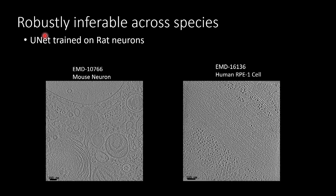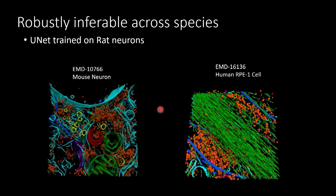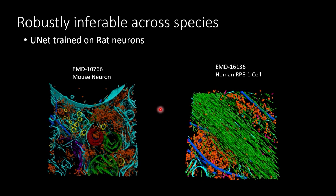In my off time, I like to pull data from the EMDB and segment it for fun. We wanted to see if a network trained on rat hippocampal neurons would generalize to other species. It very much does — data pulled from EMDB including mouse neurons and human RP1 cells, after pre-processing, run through our network fantastically. We're really excited about sharing this model with as many people as possible.